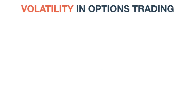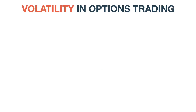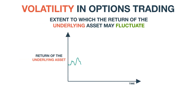In the context of options, volatility is a variable in the option pricing formula, indicating the extent to which the return of the underlying asset may fluctuate between now and the expiration date of the option.